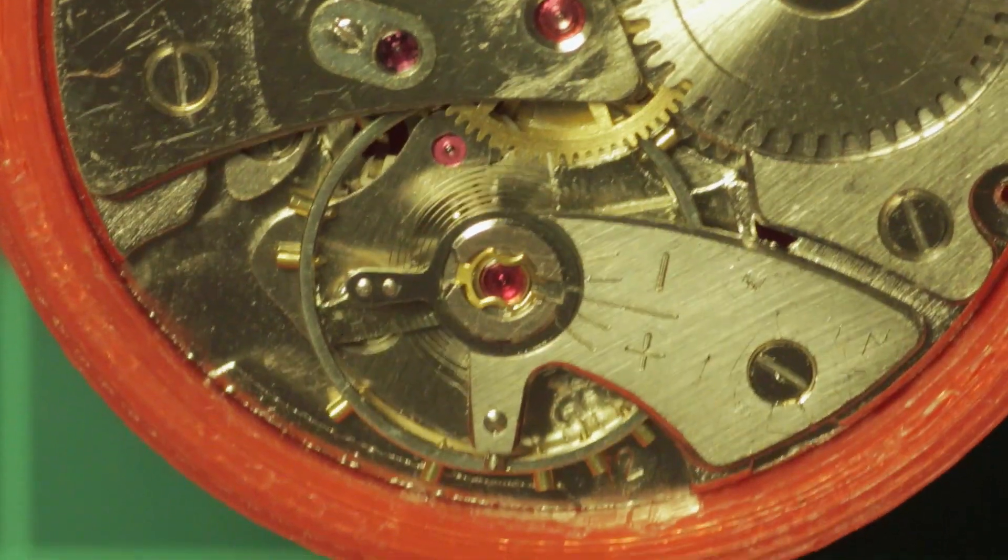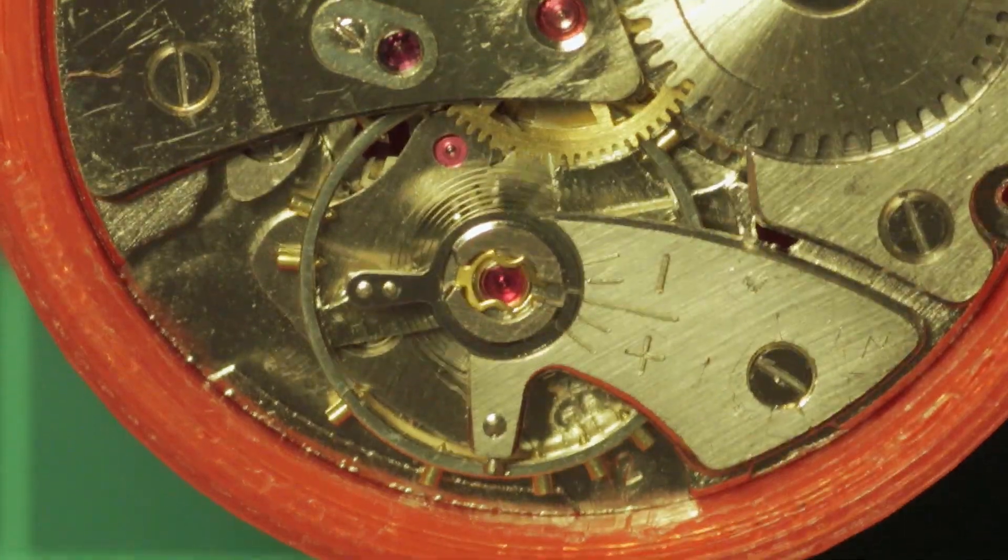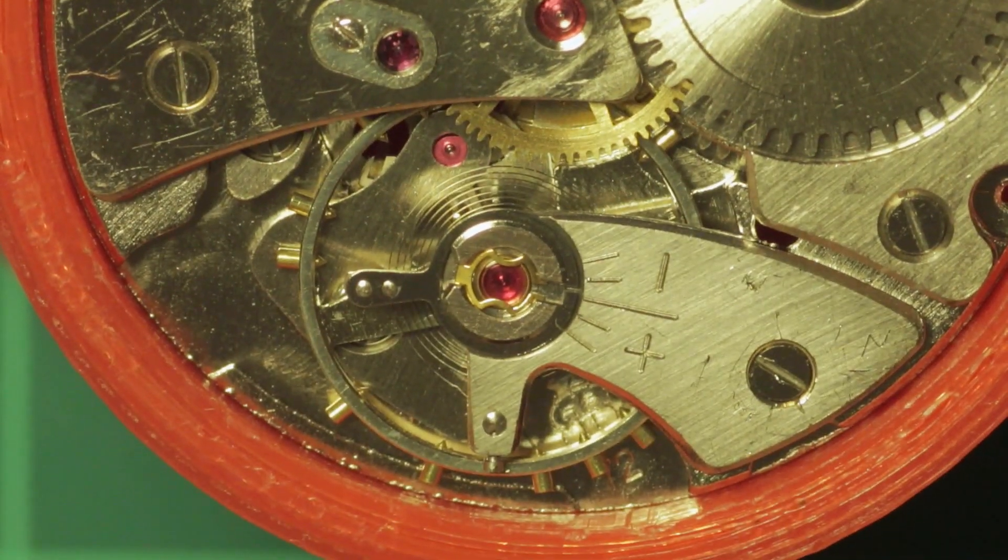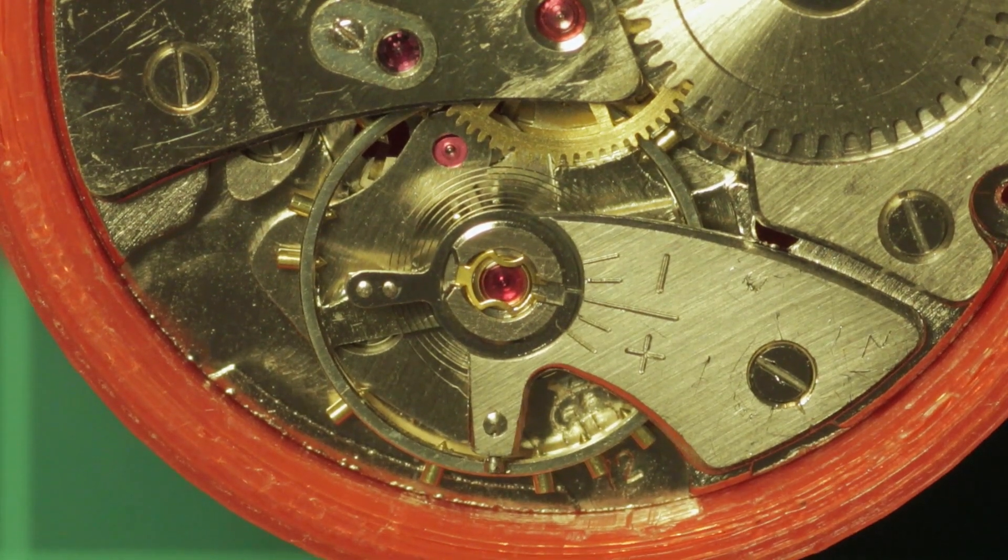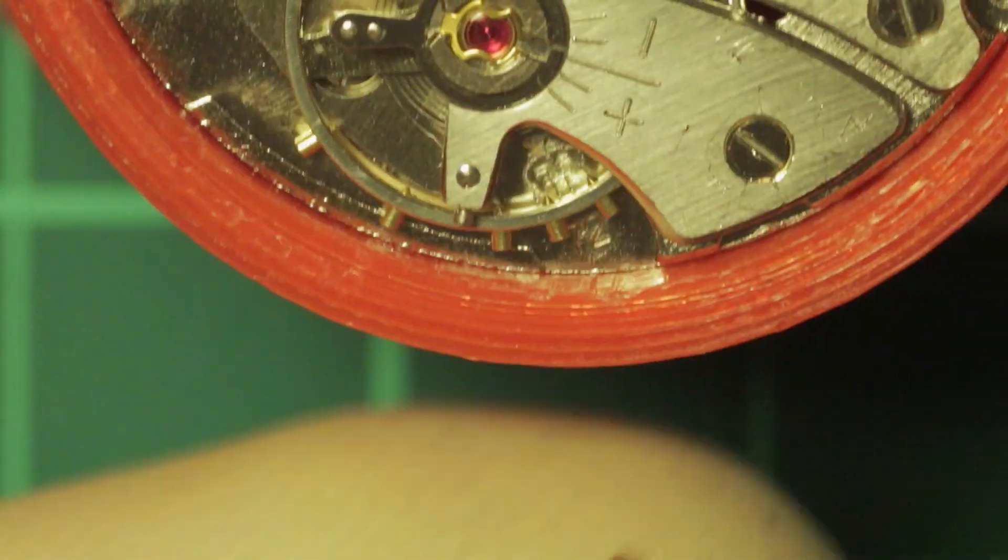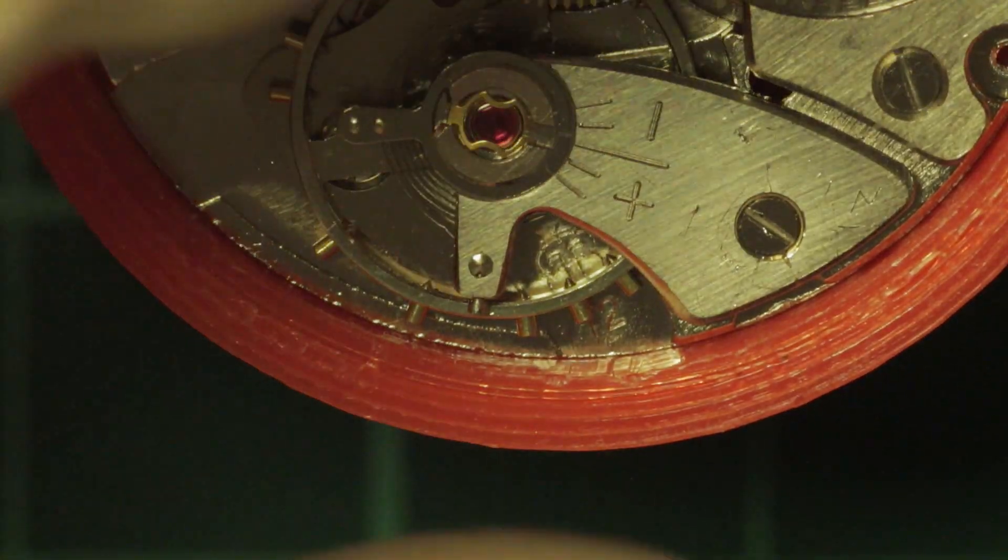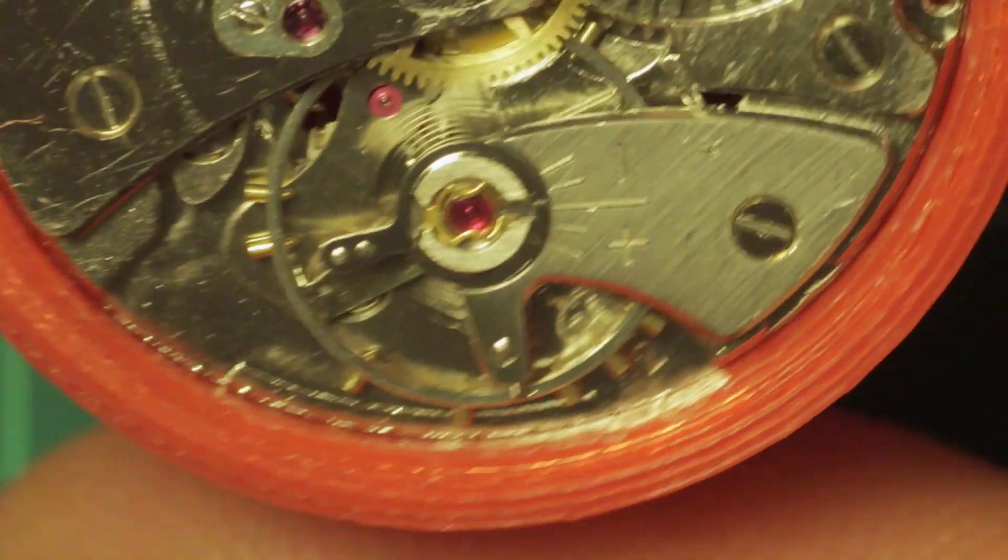You will need some isopropyl alcohol and some tissue to clean up afterwards, because this is purely for determining the lift angle of an unknown caliber. So you've worked on a watch, you've just reassembled it, and it's all back in one piece to a stage where it's running like this is.